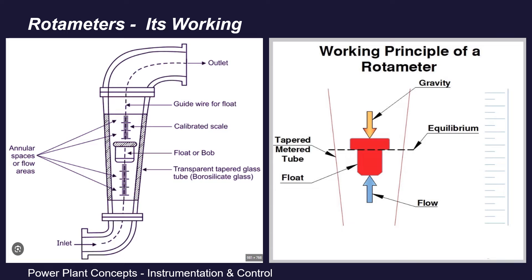Now coming to the float position — the equilibrium position. The drag force that the fluid entering the rotameter exerts on the float pushes it upward from the bottom side. The gravitational force pushes everything downward. So from bottom to top it is fluid drag force, and from top to bottom it is gravitational force. Equilibrium is when the upward and downward forces are equal.